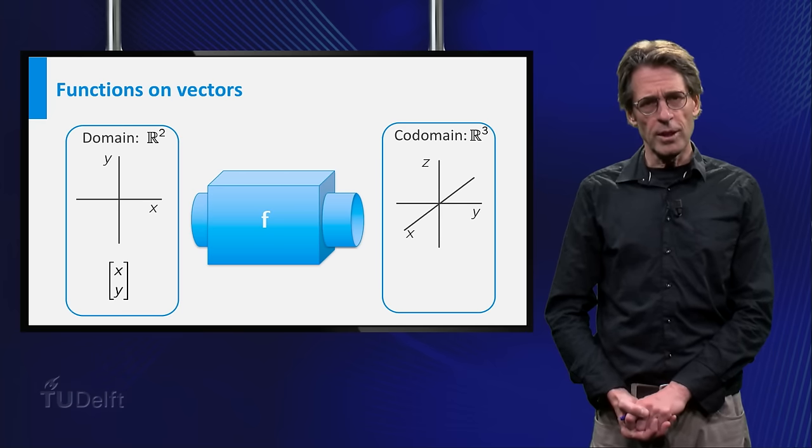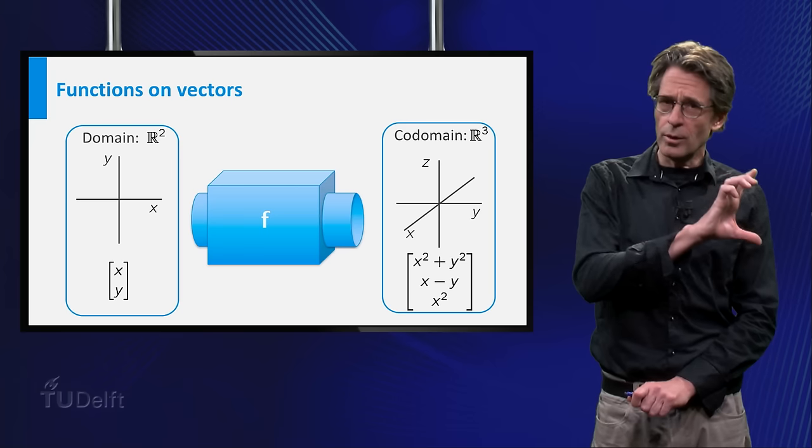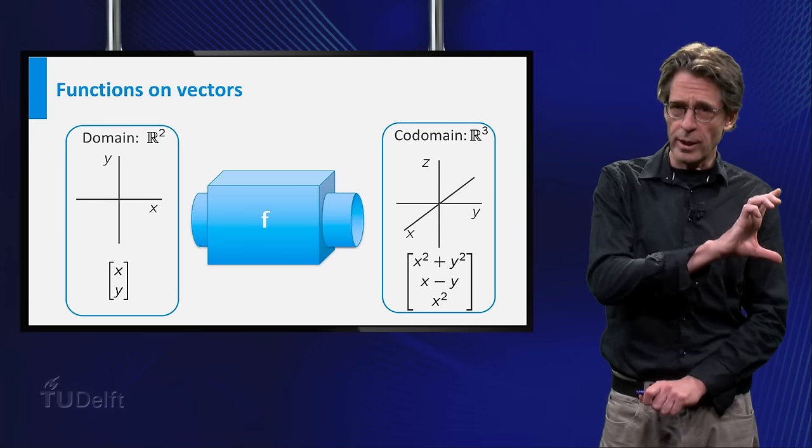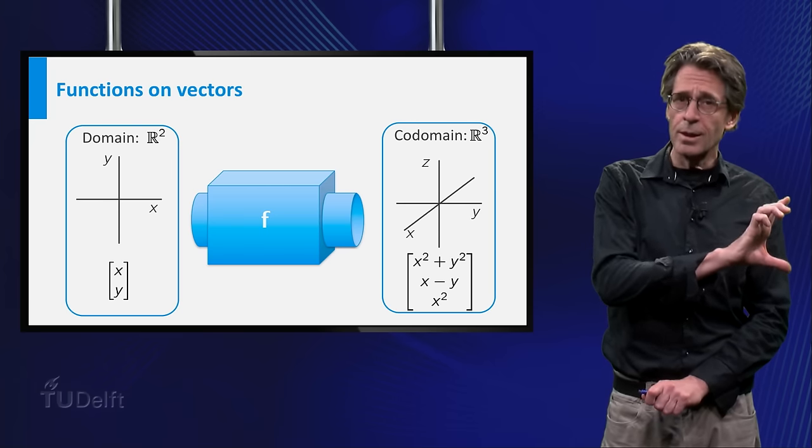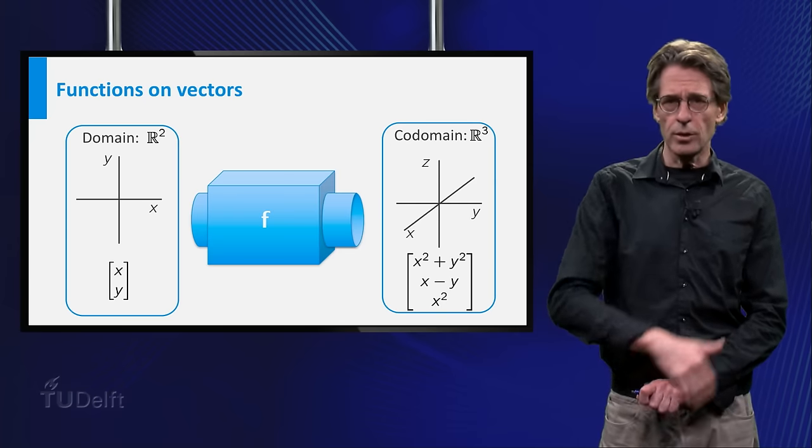The following function f maps the vector xy to the vector x squared plus y squared, x minus y, x squared. So the domain is R2 and the codomain is R3.